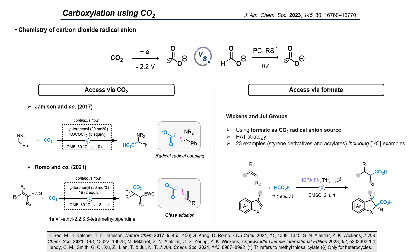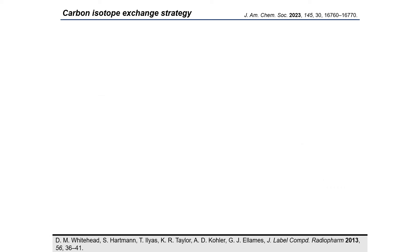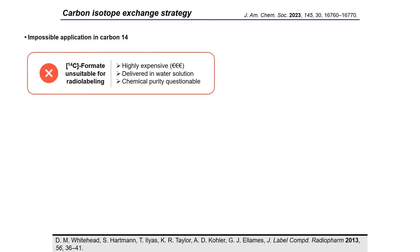Despite the improvement of the conditions over the years, the high reduction potential of carbon dioxide makes the reaction challenging. That's why, in 2021, the group of Wickens developed an innovative approach enabling the formation of the radical anion through an HAT catalyst starting from formate. They even managed to export their methodology to the carboxylation of heterocycles in a more recent paper.